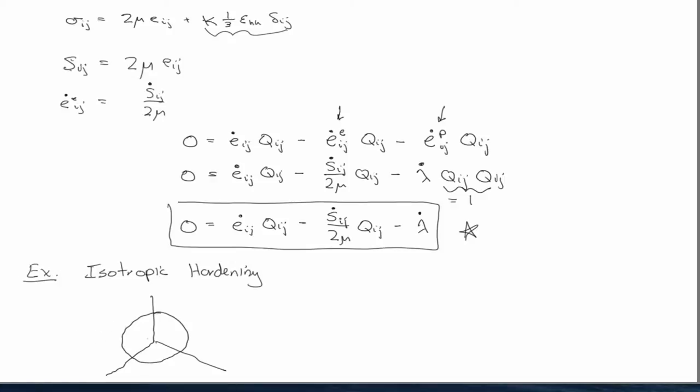So in isotropic hardening, the yield surface grows only in diameter. So we have a stress-strain curve that looks like this, and it grows in diameter as a function of the equivalent plastic strain.